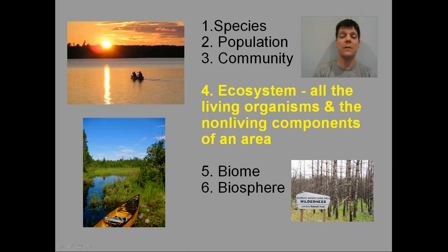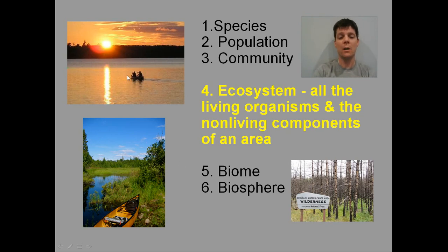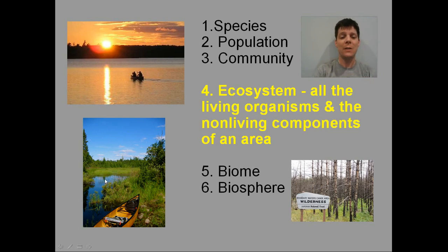The next level of organization is that of the ecosystem. An ecosystem moves beyond communities — which was all the living things in an area — and also incorporates the non-living components. If we consider the Boundary Waters canoe area, the ecosystem includes not only the fish in the lake and the plants and trees along the shore, but also non-living factors such as the water in the lake, the gases in the air, and the sunlight that allows photosynthesis to occur.